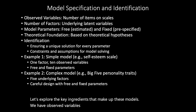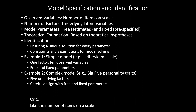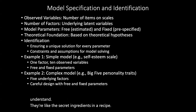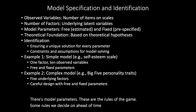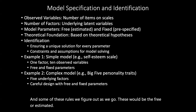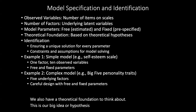We have observed variables — these are the things we can measure or see, like the number of items on a scale or survey. We have the number of factors, which are the hidden underlying ideas or feelings we're trying to understand — they're like the secret ingredients in a recipe. There are model parameters: some rules we decide on ahead of time (fixed) and some we figure out as we go (free or estimated). We also have a theoretical foundation — our big idea or hypothesis that guides the whole process, like our blueprint.